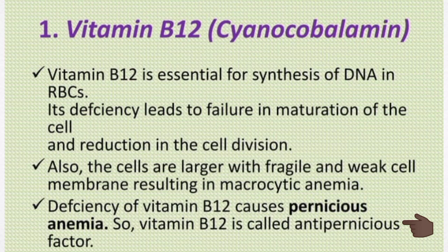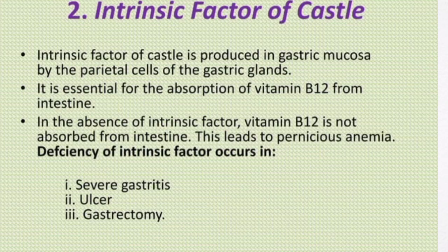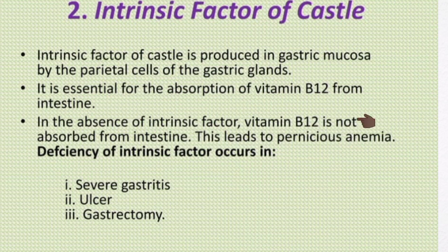The intrinsic factor of Castle is produced in the gastric mucosa by the parietal cells of the gastric glands. It is vital for the absorption of vitamin B12 from the intestine. In the absence of intrinsic factor, vitamin B12 is not absorbed from the intestine, which results in pernicious anemia. Deficiency of intrinsic factor occurs in severe gastritis and ulcer.